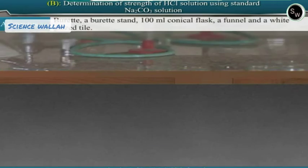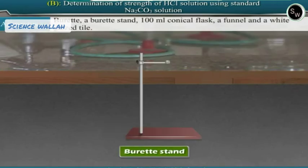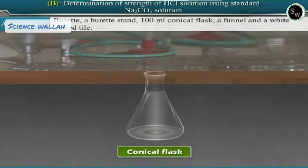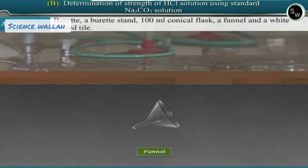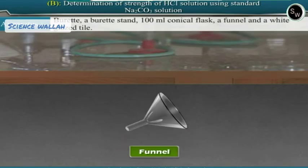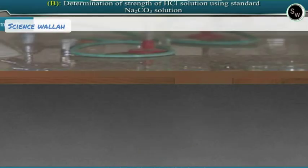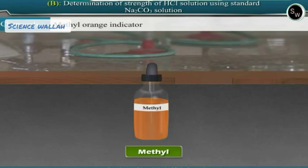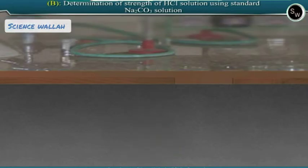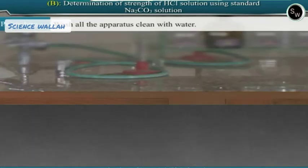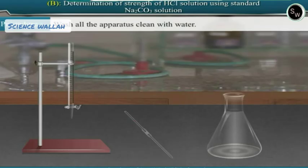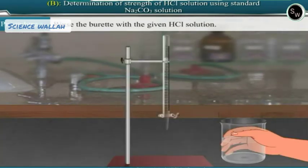To perform this experiment, the apparatus required are a burette, a burette stand, a 100 ml conical flask, a funnel, and a white glazed tile. The chemical required is methyl orange indicator. Let us perform the experiment. Wash all the apparatus clean with water. Rinse the burette with the given hydrochloric acid solution.